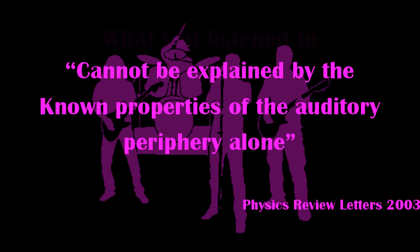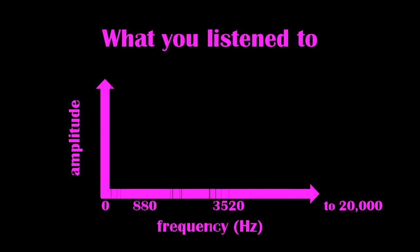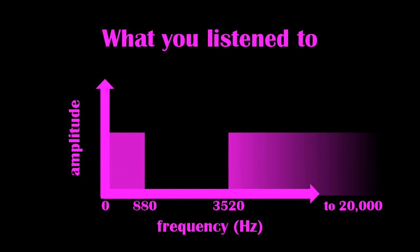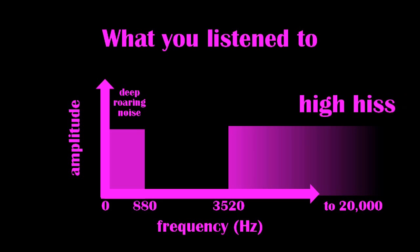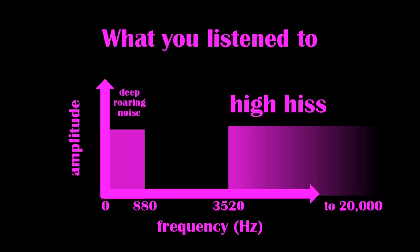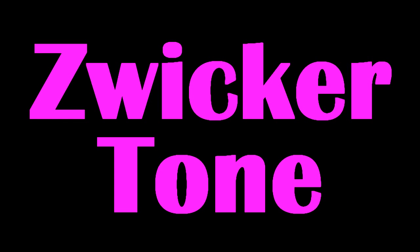So, what is it that creates the illusion? Here's a spectrum of the noise you were just listening to. The deep roaring sound had frequencies below 880 hertz, and the high hiss was random noise with frequencies above 3520 hertz. In the middle is this spectral gap, and it's in this spectral gap that the Zwicker tone appears. That's the name given to that strange audio after effect.